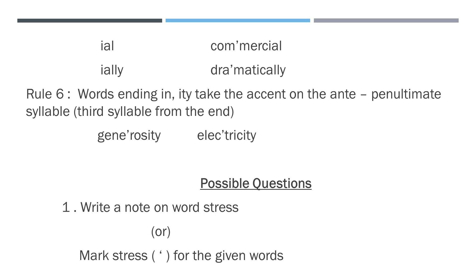The next rule is words ending in -ity take the accent on the antepenultimate syllable. Antepenultimate means the third syllable from the end. The last syllable is called ultimate, the last but one is called penultimate, and the third from the last is called antepenultimate. Examples: generosity, electricity.